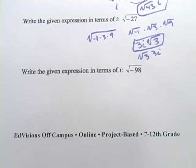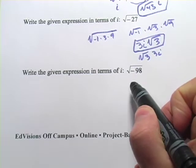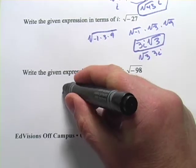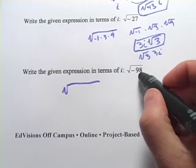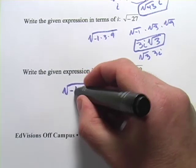All right. Let's look at another one. We've got the square root of negative 98. So, square root of negative 98. Let's see if we can do some factoring. So, I've got my negative 1.